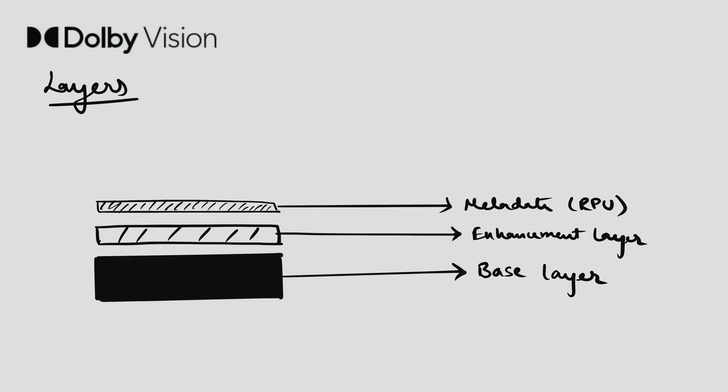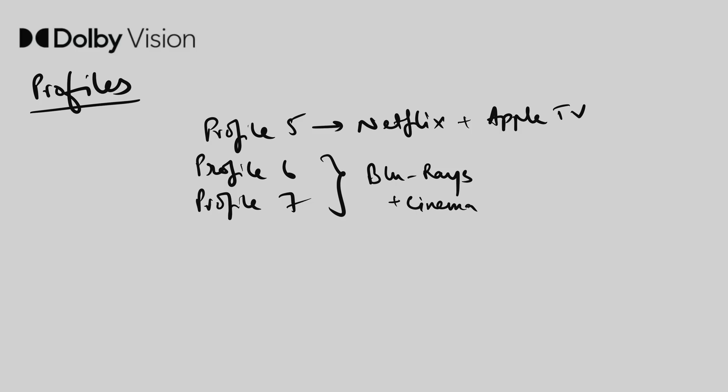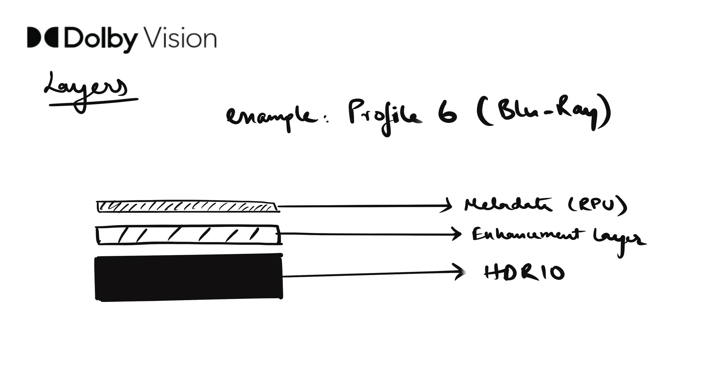Dolby Vision is based on a three-layered structure with different profiles. The three layers consist of a base layer, an enhancement layer, and an RPU which contains all the metadata. Profile 5 is used by Netflix for streaming, capped at 20 megabits per second, and is also supported by iPhones. Blu-rays with much higher bitrates are encoded in Profile 6, 7, or 9. For example, a Profile 9 Blu-ray has HDR 10 as the base layer with a Dolby Vision enhancement layer and metadata on top. On a Dolby Vision-supported TV and player, all three layers play automatically. On a non-Dolby Vision device, it falls back to the base layer with no compatibility issues.